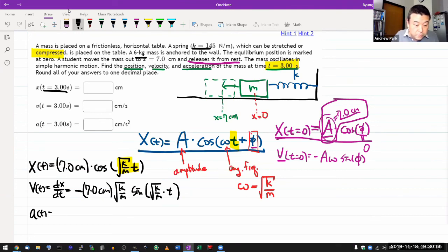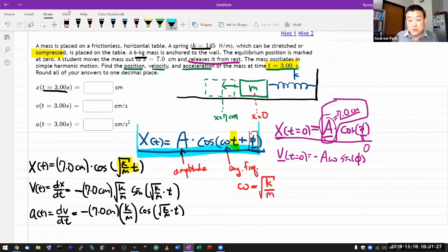For the acceleration, you just go through this one more step. It's the derivative of velocity. I keep the minus sign, minus 7.0 centimeters. I get another factor of square root of k over m, so I get k over m times cosine of square root of k over m times t. Some oscillation questions, once you learn to use this general expression for oscillatory motion, become very much easier because it's an easy version of calculus. I'll leave plugging in the numbers to you.